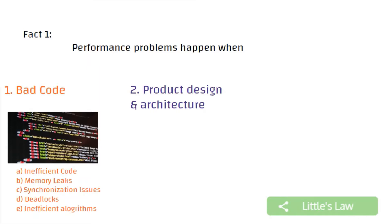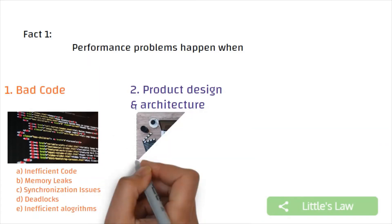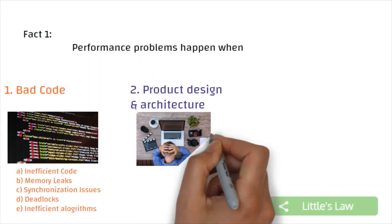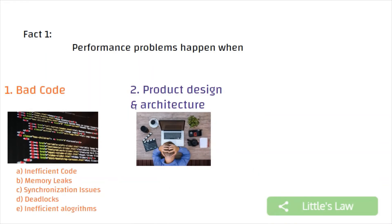The second one is product design and architecture. Whenever there are unscalable product designs and architectures, we might face performance problems. For example, when the maximum pool size of the database is set to 10, then the simultaneous connections are limited to 10. So no matter how powerful the hardware or server you have, you will face performance problems.